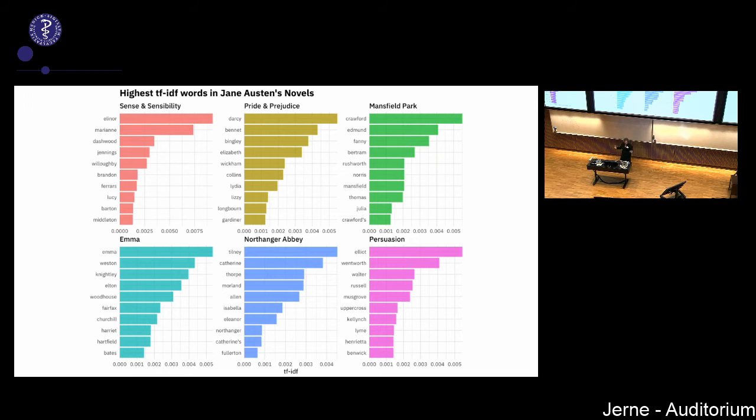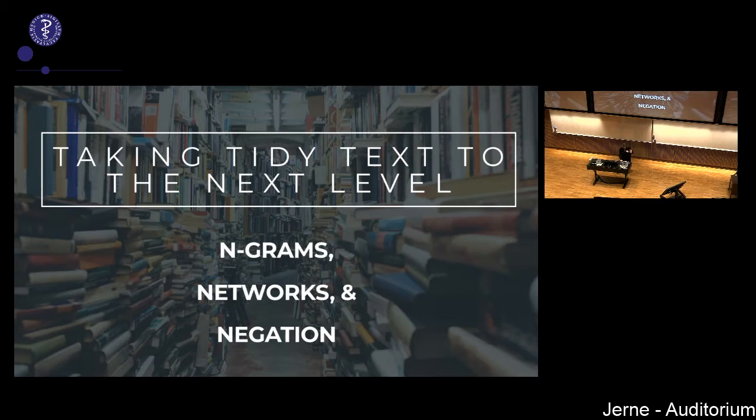TF-IDF is another count-based statistic useful in exploratory data analysis to understand what's going on in a text dataset. It's computationally fast, lends itself to quick iteration, filtering, joining, and making visualizations. It can be part of an effective toolkit.